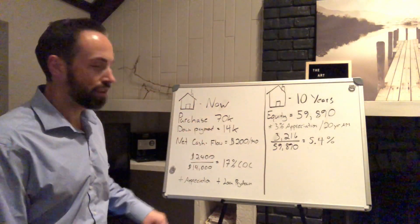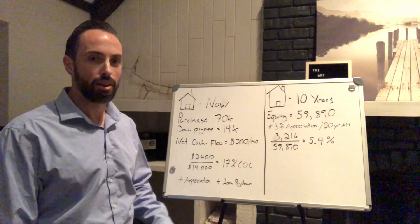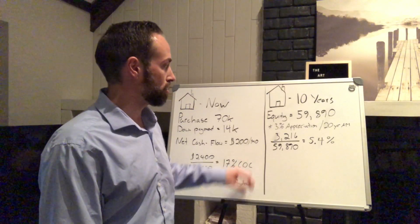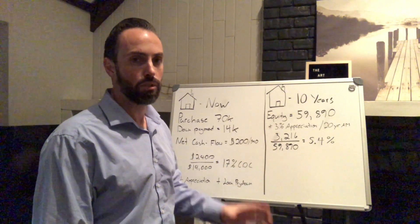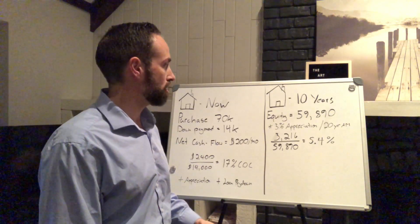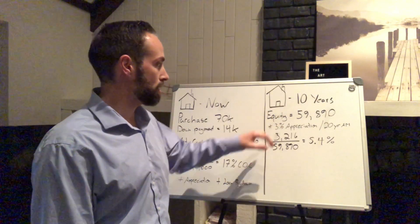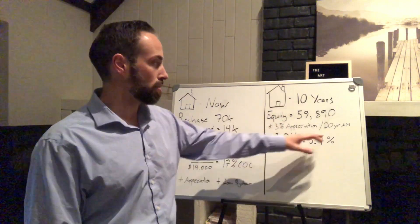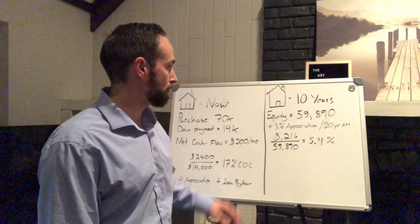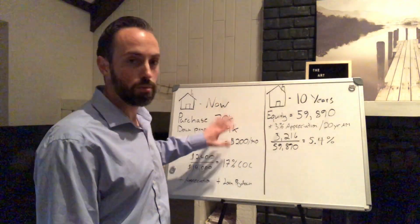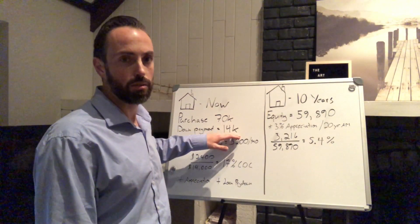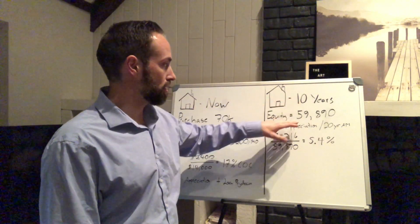Now I'm going to show you what happens if you hold on to that property for a while. I'm going to assume 3% appreciation both on the price and on the rents — basically just keeping up with inflation, so that's pretty typical — and you've held on to it for 10 years. Most of my investment properties are on a 20-year amortization. Assuming you didn't buy at a discount and paid full market price, your equity at purchase was basically $14,000, your down payment.